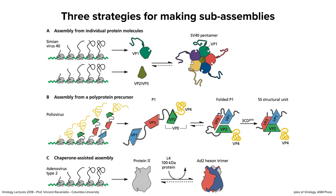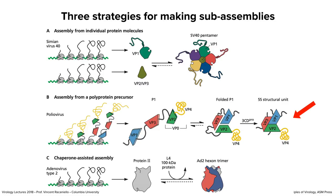A polyprotein strategy is used for poliovirus. The genome is a single RNA molecule, and one strategy to get multiple proteins from it is to make a long polyprotein and cleave it. Ribosomes translate the first part of poliovirus RNA, synthesizing the capsid proteins VP1, 2, 3, and 4 as a precursor. They fold into the right conformation, then a viral protease cleaves the bonds between them, creating a structural unit used to build virus particles.